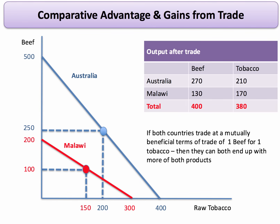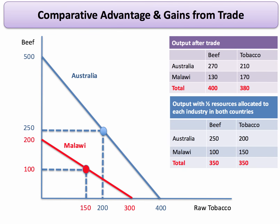Therefore Malawi goes up from zero to 130 units of beef. And there's a 130-unit swap in tobacco: Malawi gives up 130 units of tobacco, Australia had 80 and adds 130 to go up to 210. Comparing before specialisation and after trade, we find that in both beef and tobacco, both countries end up with more of both products. In other words, there are gains from specialisation and exchange based on the law of comparative advantage.